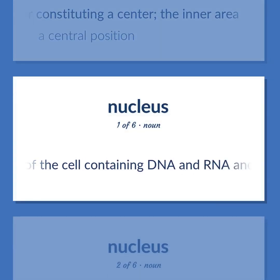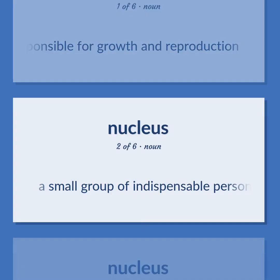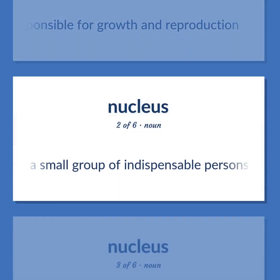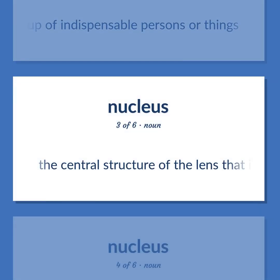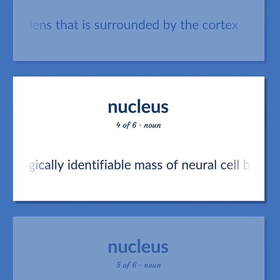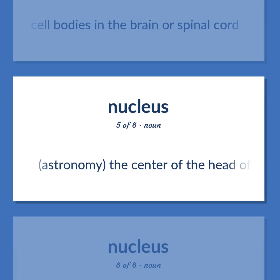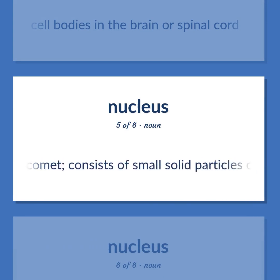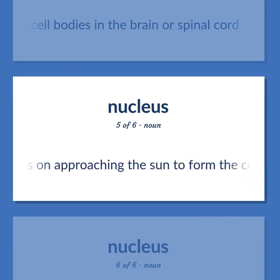A part of the cell containing DNA and RNA and responsible for growth and reproduction. A small group of indispensable persons or things. The central structure of the lens that is surrounded by the cortex. Any histologically identifiable mass of neural cell bodies in the brain or spinal cord. Astronomy: the center of the head of a comet, consisting of small solid particles of ice and frozen gas that